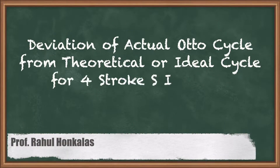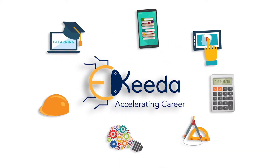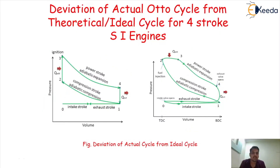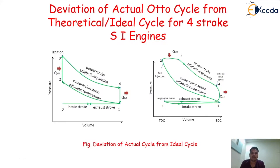Dear friends, today we are going to understand the deviation of actual auto cycle from theoretical or ideal cycle for a 4-stroke SI engine. In the last few lectures we already started to see everything about the engines. We started with the definition of engine, then discussed engine construction and its terminology, and the classification of internal combustion engines. Then we had the Otto cycle and its derivation, as well as the diesel cycle and its derivation.